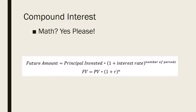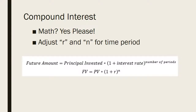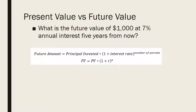Now here's the formula. The amount you have in the future equals the amount you invest right now, times one plus the interest rate, to the power of the number of periods: FV = PV × (1 + r)^n. You can adjust the rate r and the number of periods n for the problem you're working with. Practice question: what is the future value of $1,000 at 7% interest five years from now? That's 1000 × 1.07^5, which comes out to a little over $1,400 — the future value is $1,402.